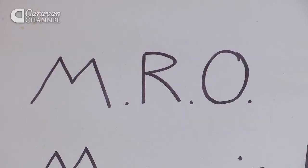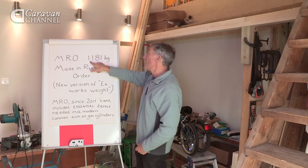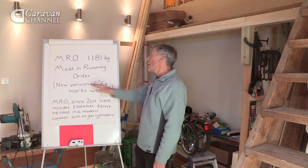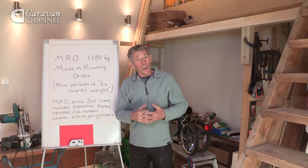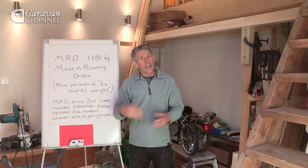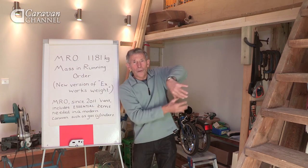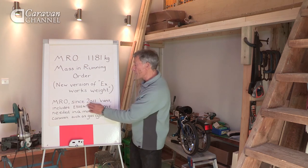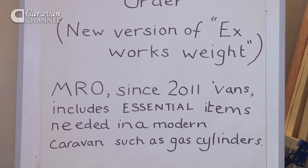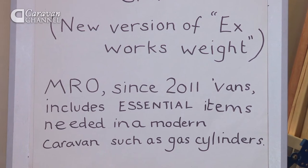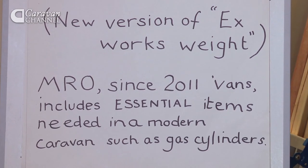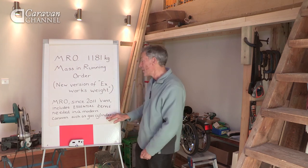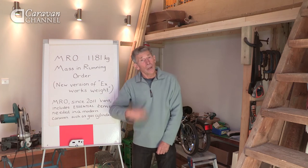Also on the label on the side of the caravan it had the word MRO, and it said 1181 kilograms. MRO stands for Mass in Running Order — it's a new version of what we used to call ex-works weight, the weight of a caravan when it rolled off the factory production line. Since 2011, a caravan's MRO also includes things essential for normal caravan existence, like the gas cylinder and the gas inside it, and other equal items such as the toilet chemicals.